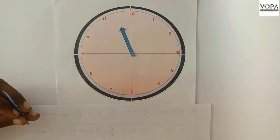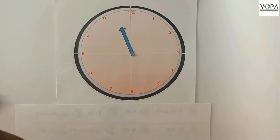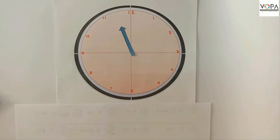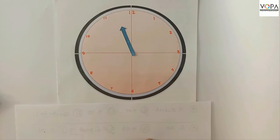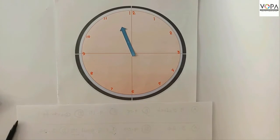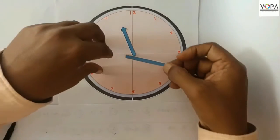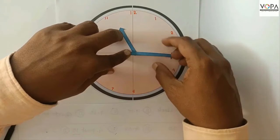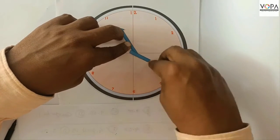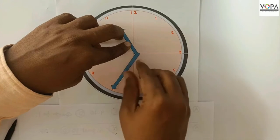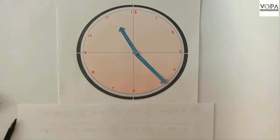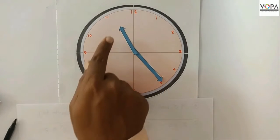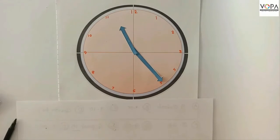If short hand is between 11 to 12 and we want to show 11 past 25 minutes, then where should be the long hand? Is it on 3? Is it on 4? Is it on 7? Is it on 5? The answer is it should be on the 5.